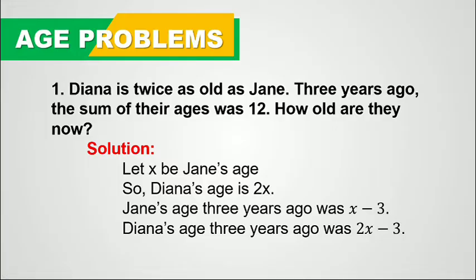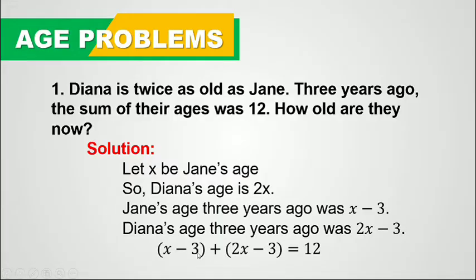It is also said that the sum of their ages 3 years ago was 12, so we can create an equation to represent this statement. The equation is: (x minus 3) plus (2x minus 3) equals 12, because x minus 3 is Jane's age 3 years ago, and 2x minus 3 is Diana's age 3 years ago, and their sum is 12.